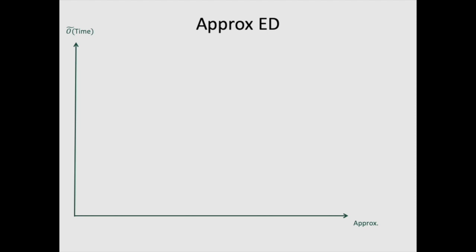To explain the previous work, we use the following graph. On the x-axis, we have the approximation factor. On the y-axis, we have the running time. So the classic DP is a 1 approximation that runs in n squared time.